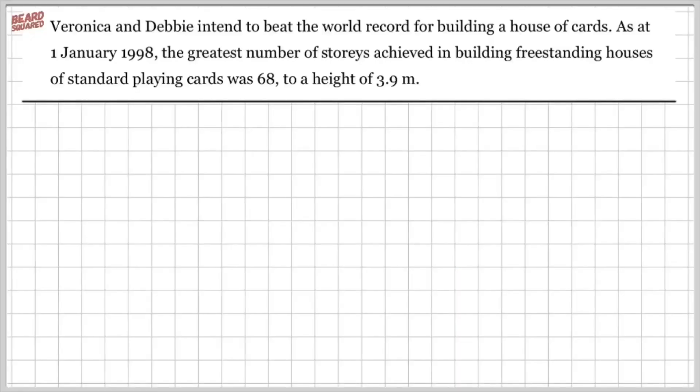So we can draw the diagrams for the first three terms of this sequence. A single-story house of cards looks like this. You've got three cards. A double-story house of cards looks like this. And a triple-story house of cards looks like this. So those are my first three terms: n equals 1, n equals 2, and n equals 3.